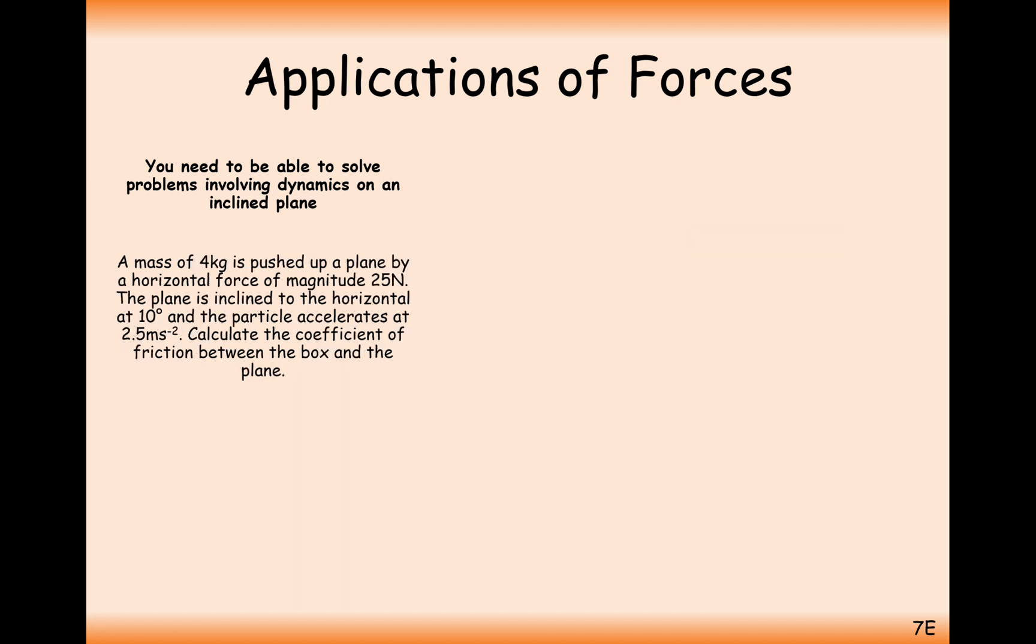So that's the first question there then. Let's move on to a slightly more difficult one now. A mass of 4 kg is pushed up the plane by a horizontal force of 25 N. The plane is inclined to the horizontal at 10 degrees and the particle accelerates at 2.5 meters per second squared. Calculate the coefficient of friction between the box and the plane. So in this type of question, you should proceed as if you did have the coefficient of friction. Make yourself an equation. You'll have acceleration, so you'll have the full answer on one side and then you can solve for mu.